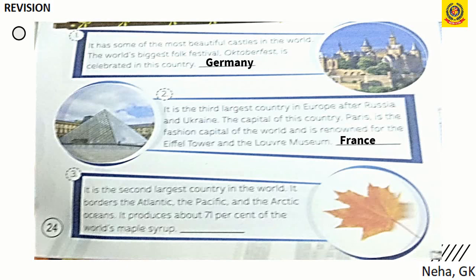Third, the second largest country in the world, bordering the Atlantic, Pacific and Arctic Oceans, and producing about 71% of the world's maple syrup — the answer is Canada.